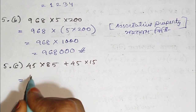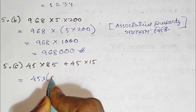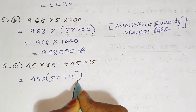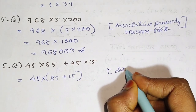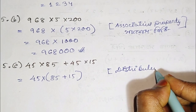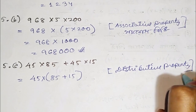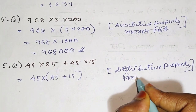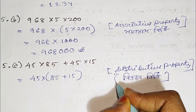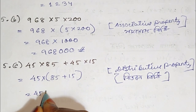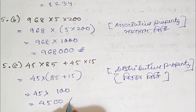We have 45 into 85 plus 15, which equals 45 into 100. The property used here is the distributive property. So 45 multiplied by 100 equals 4500. That is the answer.